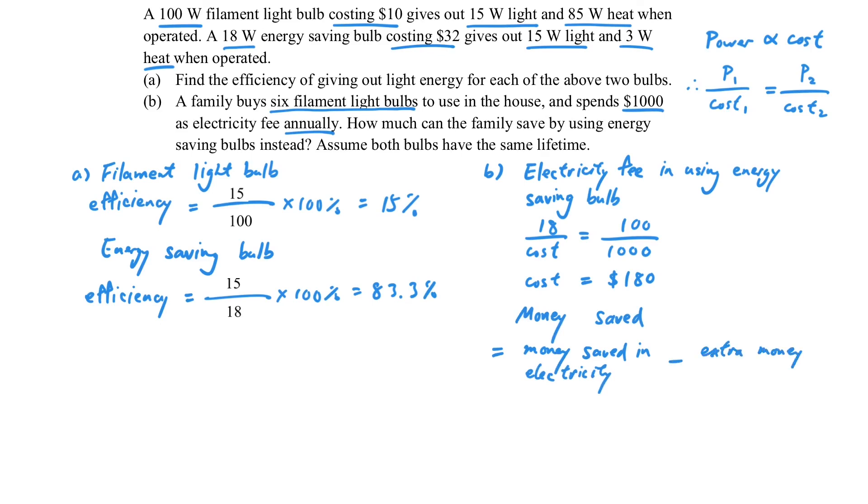So the money saved should be the money saved in electricity minus the extra cost for the bulb. So that we can calculate the money saved in electricity minus the extra cost for the light bulb. So that we can get the correct answer.